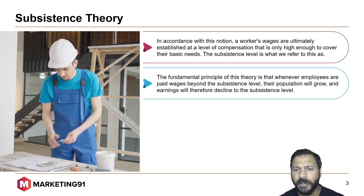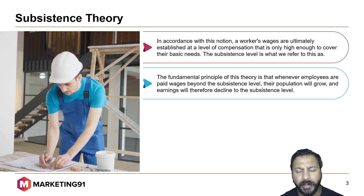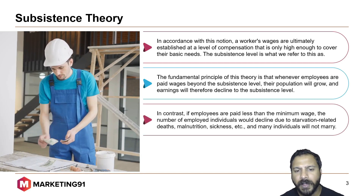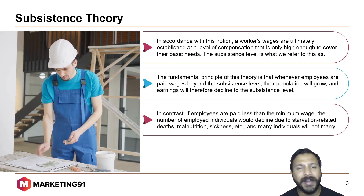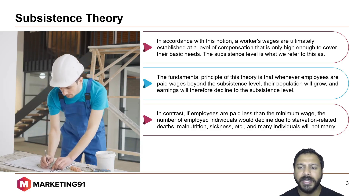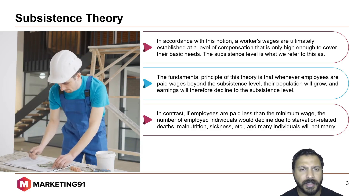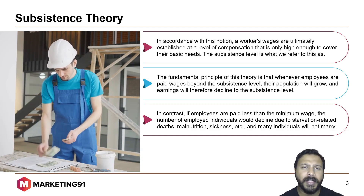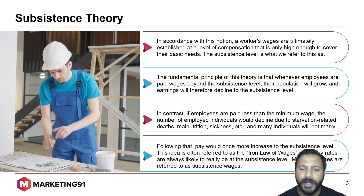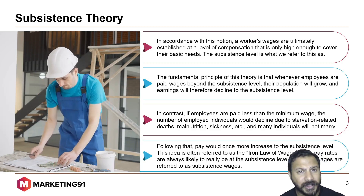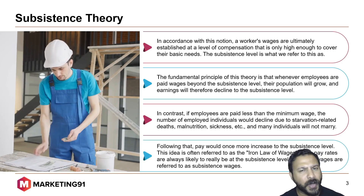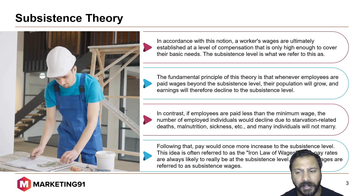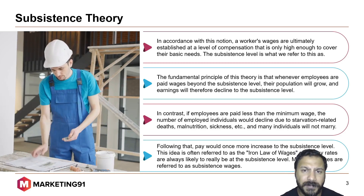The fundamental principle of this theory is that whenever employees are paid wages beyond this level, their population will grow and earnings will therefore decline to the subsistence level. In contrast, if employees are paid less than the minimum wage, the number of employed individuals would decline due to starvation-related deaths, malnutrition, sickness, etc., and many individuals will not even marry. Pay would then increase to the subsistence level again. This idea is often referred to as the iron law of wages, since pay rates are always likely to be at the subsistence level, and minimum wages are referred to as subsistence wages.